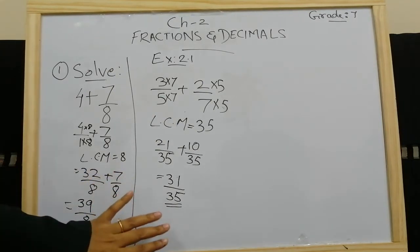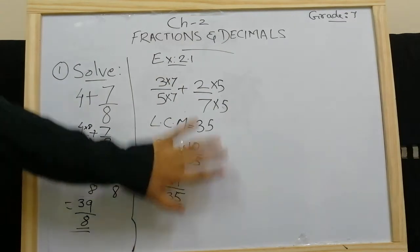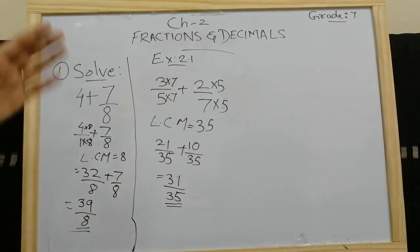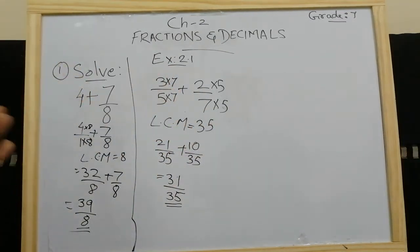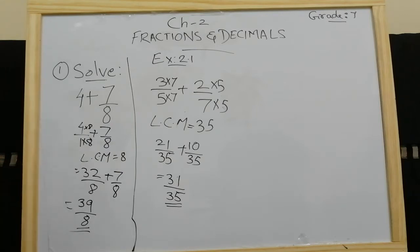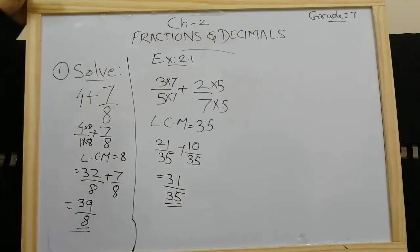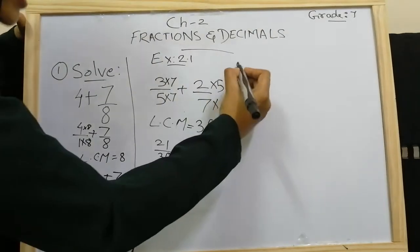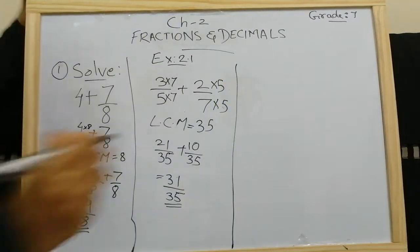This same process applies in case of subtraction as well. Just check if denominators are different, and if they are, take the LCM, make them the same, and then do the same process. If the denominators are already the same, you can directly add or subtract them. Now I will teach you in case of 3 numbers — let's see what happens.